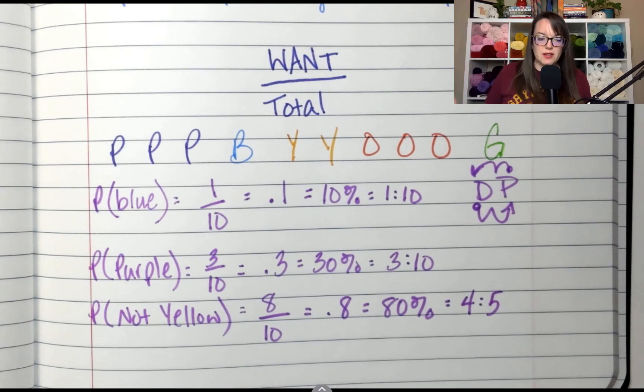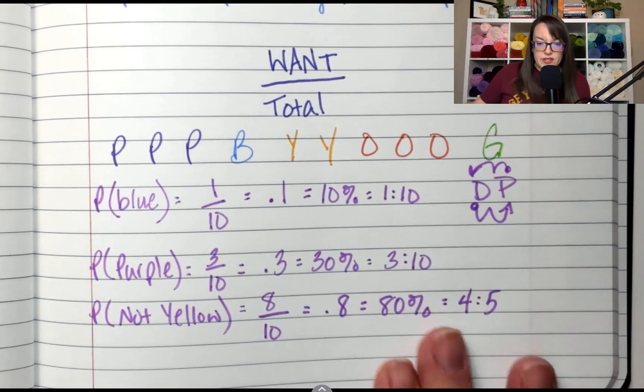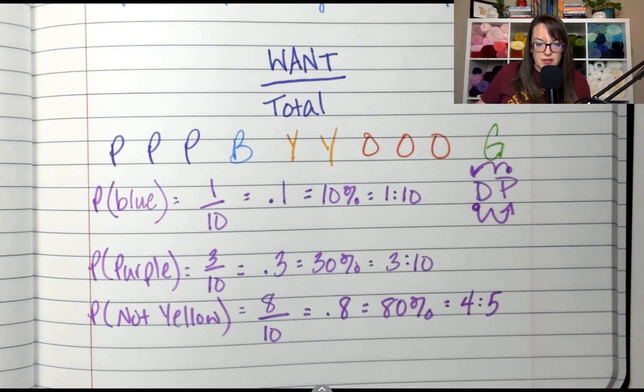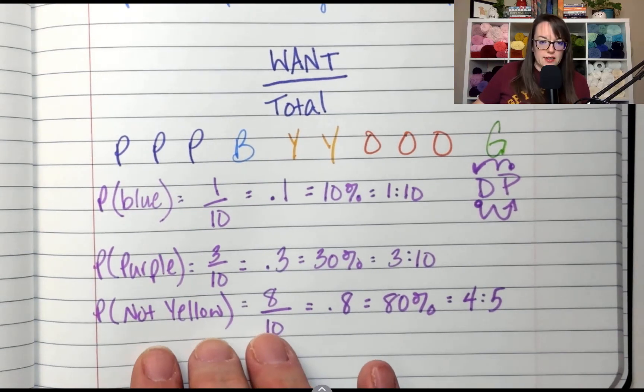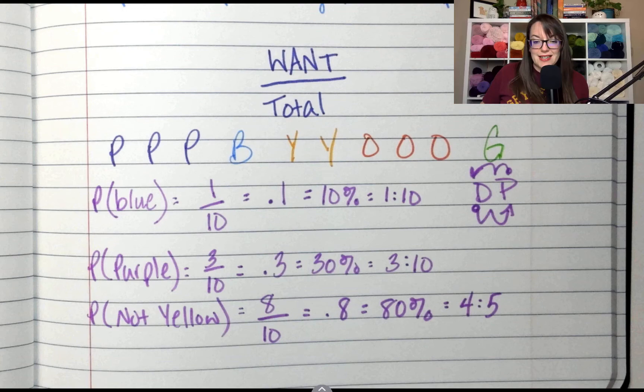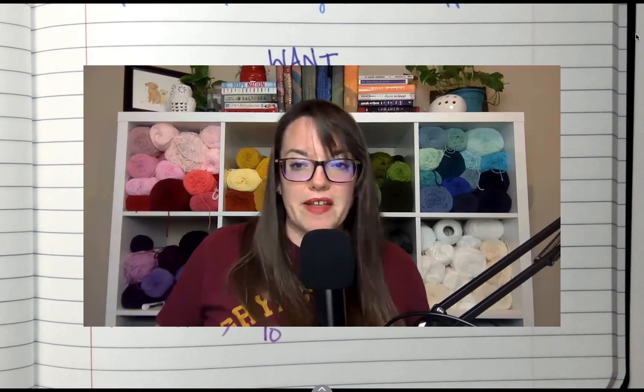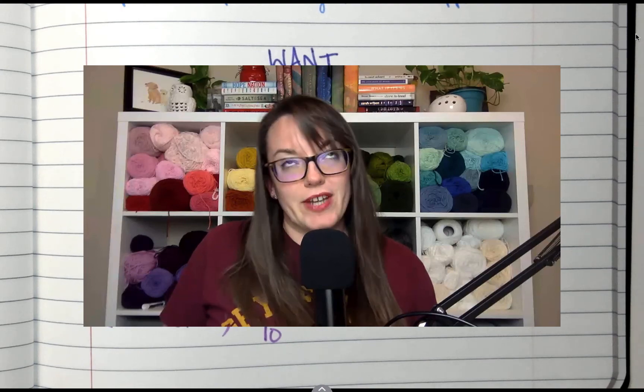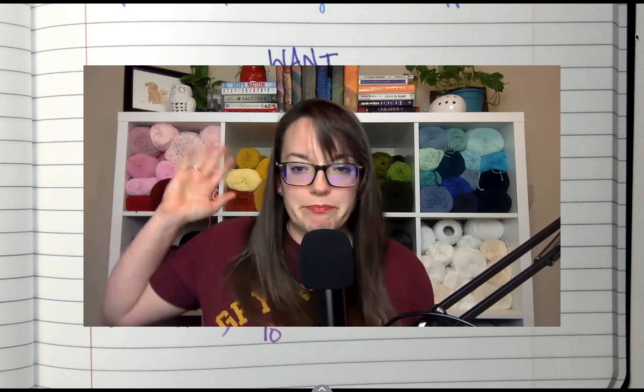All right. That's pretty much it. A lot of the questions are going to ask you like, is this likely? Is it not likely? So you're just looking at these. Out of these three, which one is likely to happen? Not getting a yellow. Which one's least likely to happen? Getting a blue. And that's pretty much probability for now. I will see you guys next time. Later.